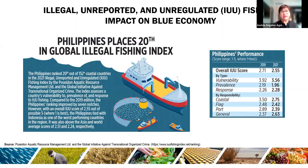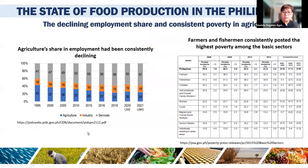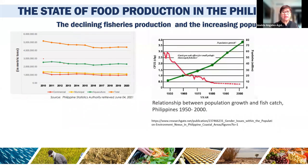There is also illegal, unreported, and unregulated fishing impacting the blue economy, and the Philippines ranks 20th globally in illegal fishing. The state of food production in the Philippines is declining, as shown in the trend from 2010 from the Philippine Statistics Authority. Commercial fish production has been declining, as well as production in municipal and aquaculture communities.